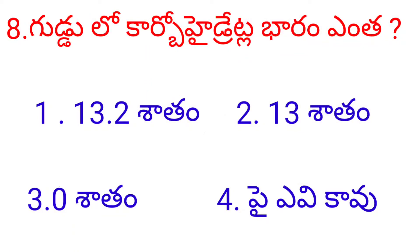Next question. What is the carbohydrate content in eggs? Option 1: 13.2 percent. Option 2: 13 percent. Option 3: 0 percent. Option 4: very less. The answer is Option 3 — 0 percent. Next question.